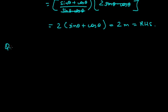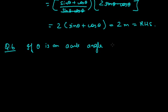Now one more question: If θ is an acute angle and tanθ + cotθ = 2, find the value of tan⁹θ + cot⁹θ. From tanθ + cotθ = 2, we can find the value of θ.